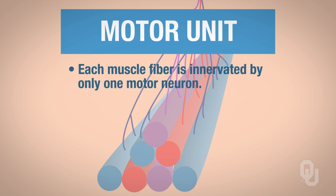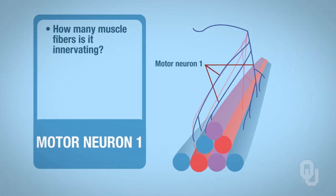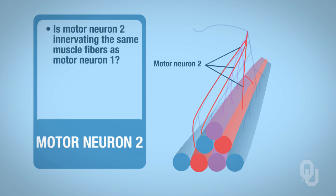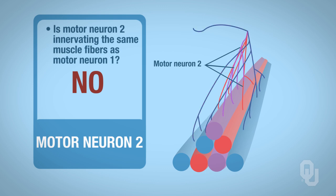Each muscle fiber is innervated by only one motor neuron. Looking at motor neuron number one, it is innervating three different muscle fibers. Motor unit two innervates a different muscle fiber. Motor neuron number two is not innervating the same muscle fibers as motor neuron number one. Every one of those muscle fibers is only innervated by one neuron.